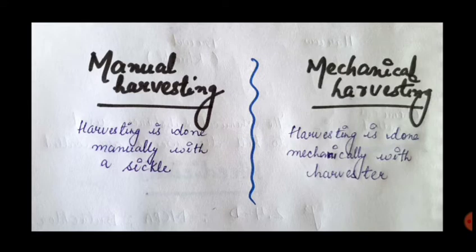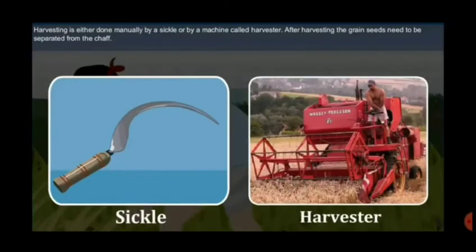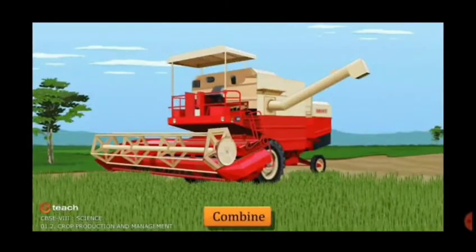Let me show you some diagrams. You can see in the picture the manual method of harvesting done using a sickle, and the harvester used for mechanical harvesting. There is also a machine that is used for both threshing and harvesting combined — this is called a combine.